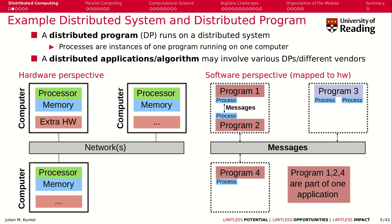Let me give you an example of a distributed program and a distributed system, and how we could sketch that. One part of the learning objectives is to understand and be able to draw such a figure. On the left side from the hardware perspective, we have different computer systems — one, two, three computers connected using a network, indicated by those little links. A computer has typically a CPU, a processor, some memory because we're talking about a von Neumann machine, and possibly some specific extra hardware unique to that computer.